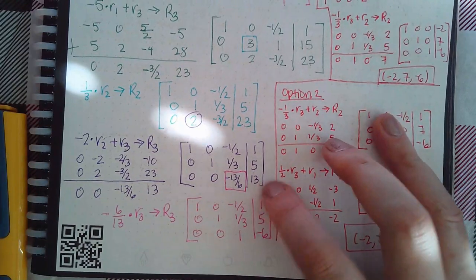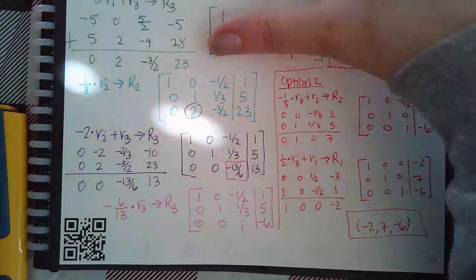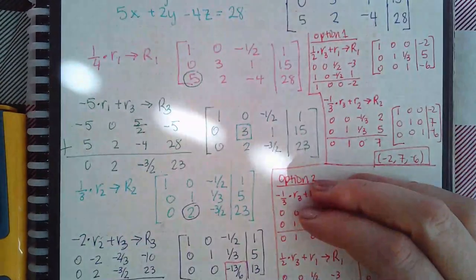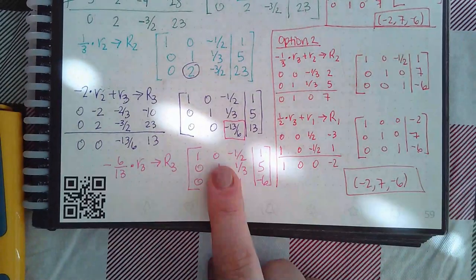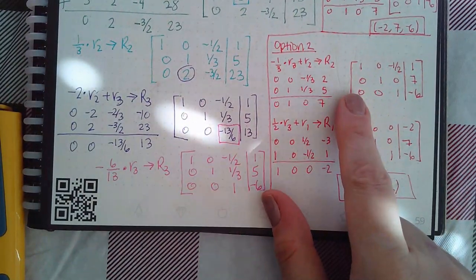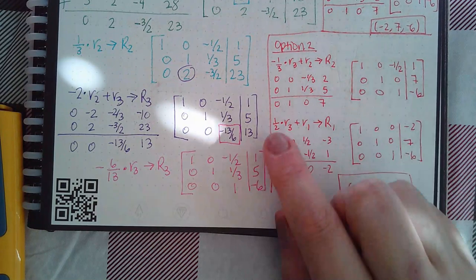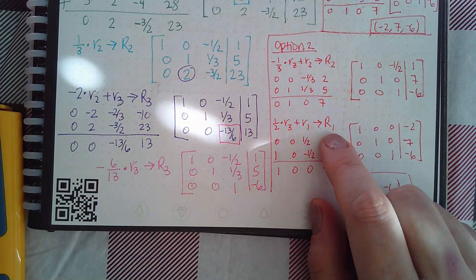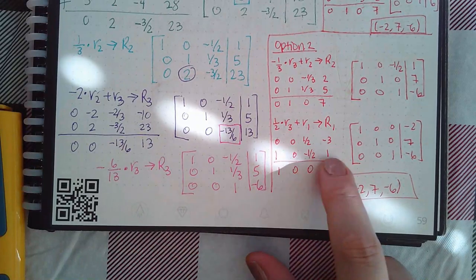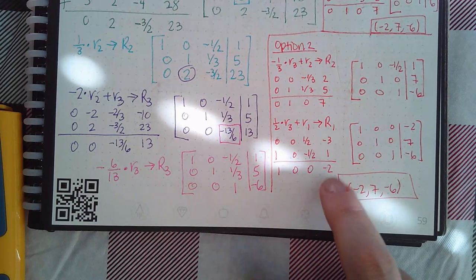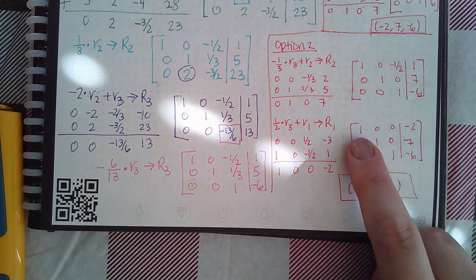Each of those three entries times negative one-third gives me these three values; put row two underneath and combine — I still get zero, one, zero, seven for row two, so I replace that. I kept row one the same as it was from the previous step. Then I still need to make the other entry zero, so I use positive one-half times row three plus row one to get the zero I need. All three entries times one-half, then row one underneath — I get all of these values to replace row one, keeping row two and row three the same.